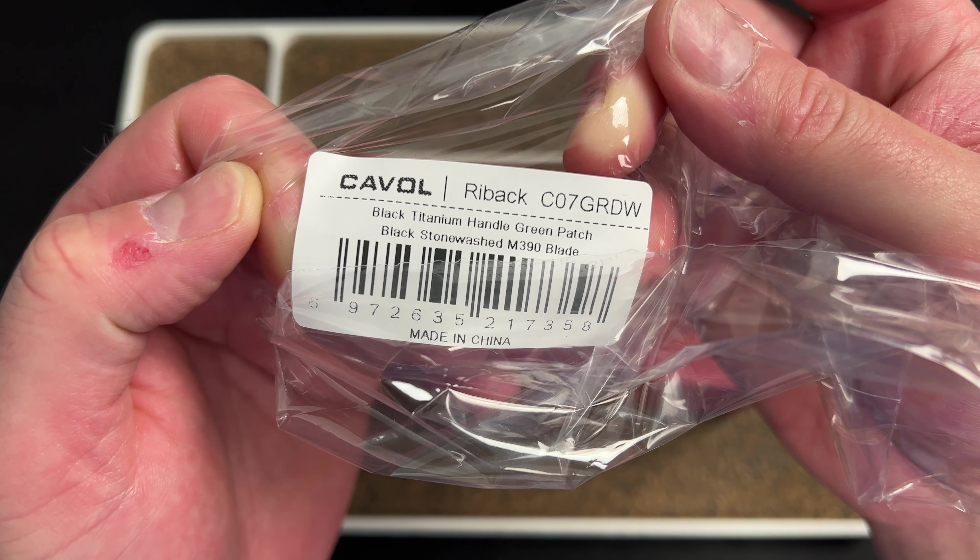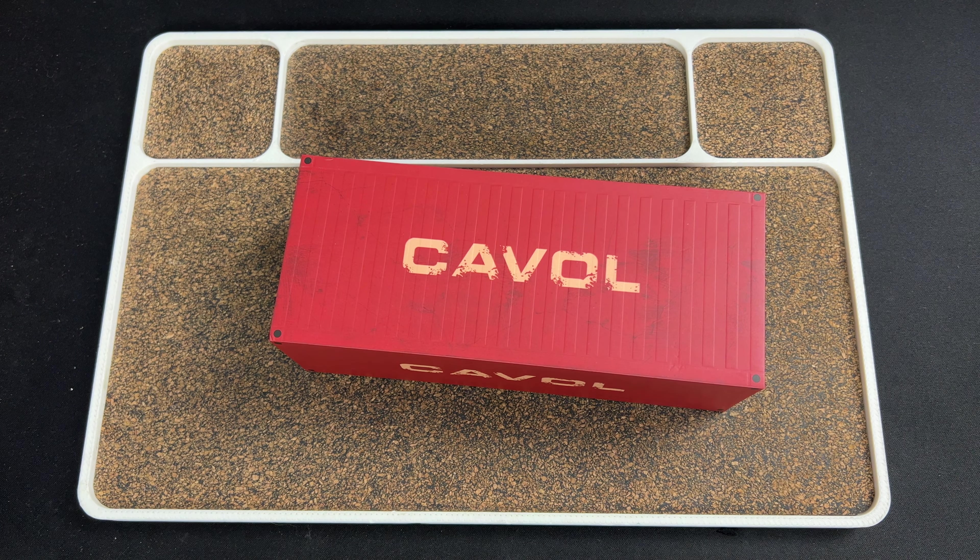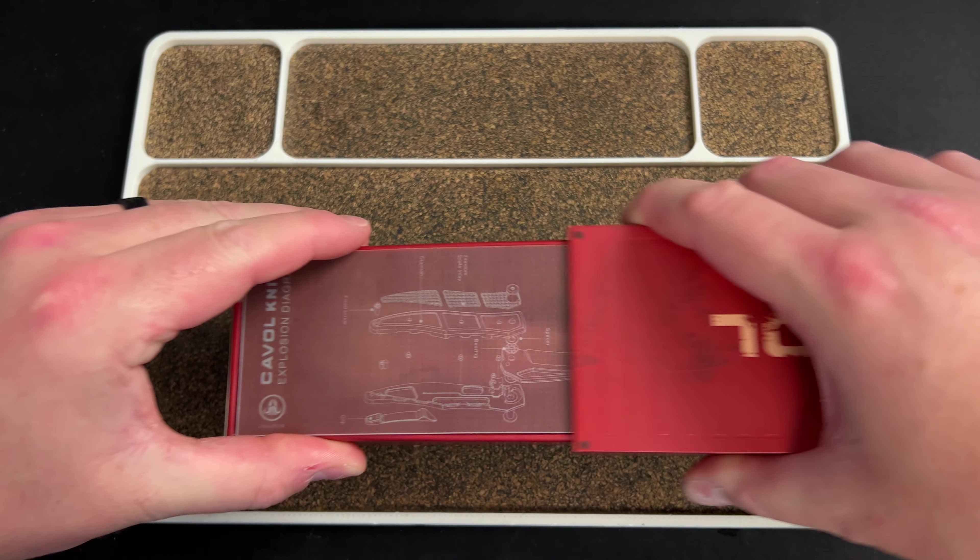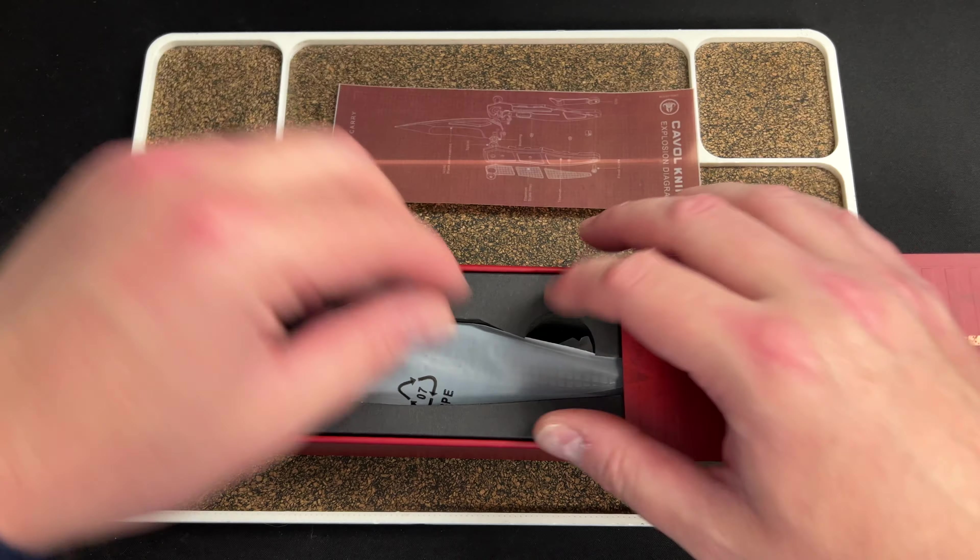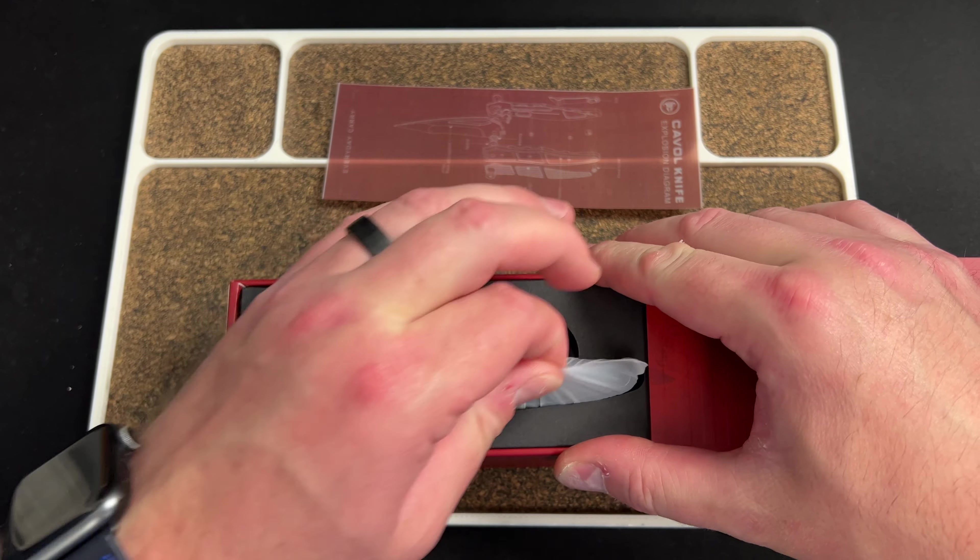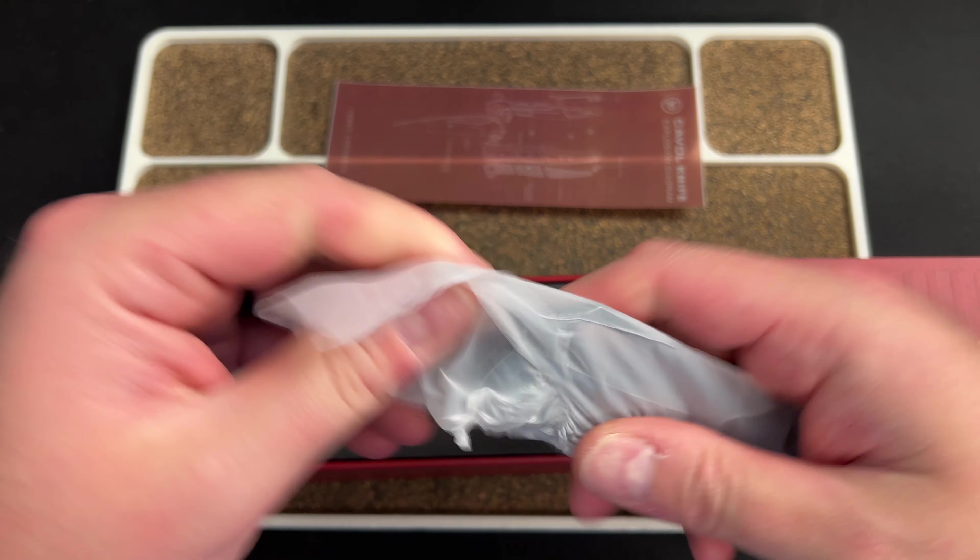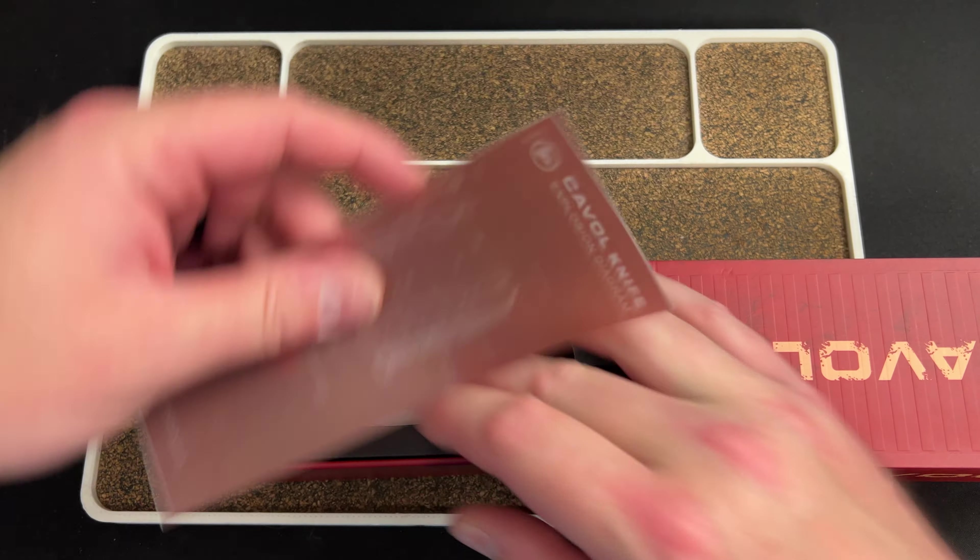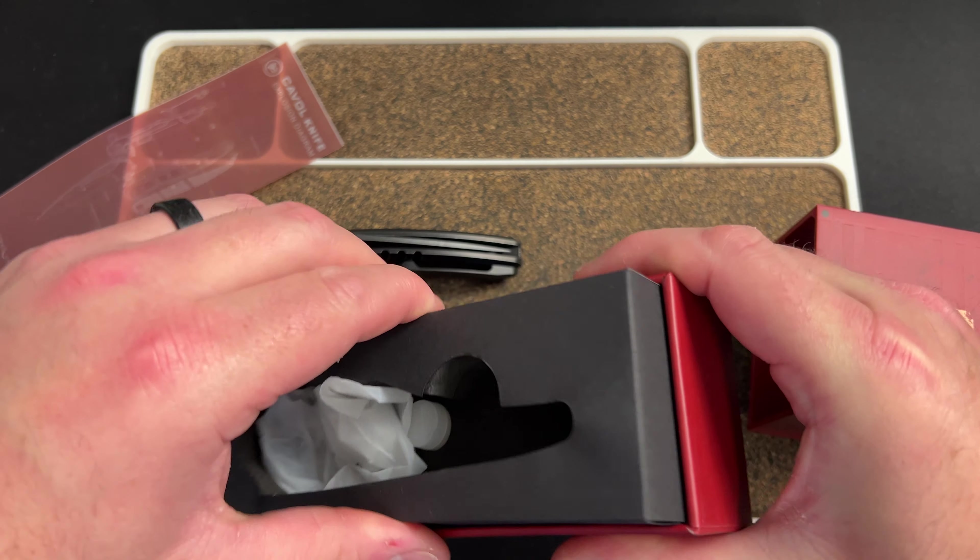The name is on here, the Ryback. It has a black titanium handle, green patch, black stonewash M390 blade. This is a sort of self-defense style knife. It's a pikal, so keep that in mind. This is not something I would normally carry and use, but I like to try new things and they just keep coming out with cool stuff. Let me check what's under here because I always forget.